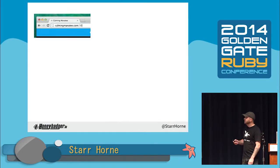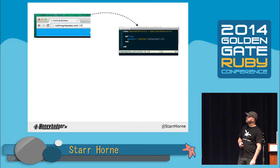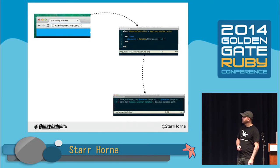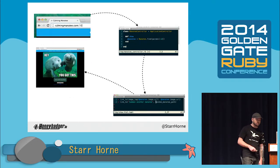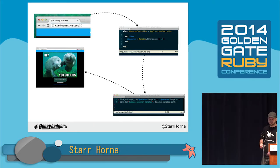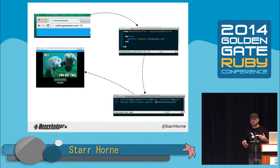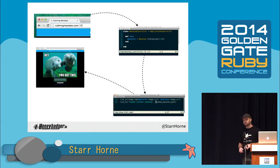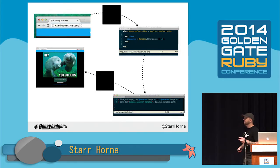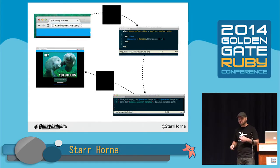We all know how this works. You type in a URL into your browser. That triggers your Rails controller, which causes a view to be rendered, which causes a nice picture of a calming manatee to be rendered back to the browser. That's a mental model I use when I'm developing. But if you've been at this a while, you might start to notice that this connection between the browser and the controllers and the views is a little bit mysterious. It's kind of like a black box.